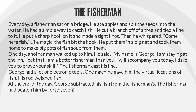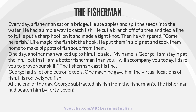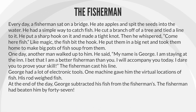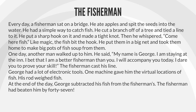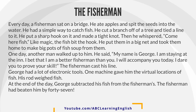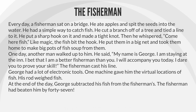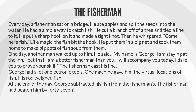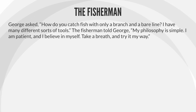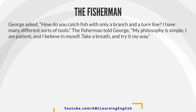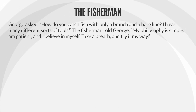One day, another man walked up to him. He said, 'My name is George. I am staying at the inn. I bet that I am a better fisherman than you. I will accompany you today. I dare you to prove your skill.' The fisherman cast his line. George had a lot of electronic tools. One machine gave him the virtual locations of fish. His rod weighed fish. At the end of the day, George subtracted his fish from the fisherman's. The fisherman had beaten him by 47. George asked, 'How do you catch fish with only a branch and a bare line? I have many different sorts of tools.' The fisherman told George, 'My philosophy is simple. I am patient and I believe in myself. Take a breath and try it my way.'